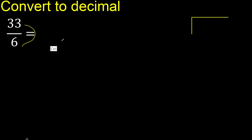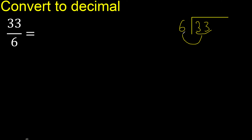33 divided by 6. 3 is less, therefore next. 33 is not less, therefore work with 33. 6 multiplied by which number is nearest to 33 but not greater? 6 multiplied by 6 is 36, which is greater.